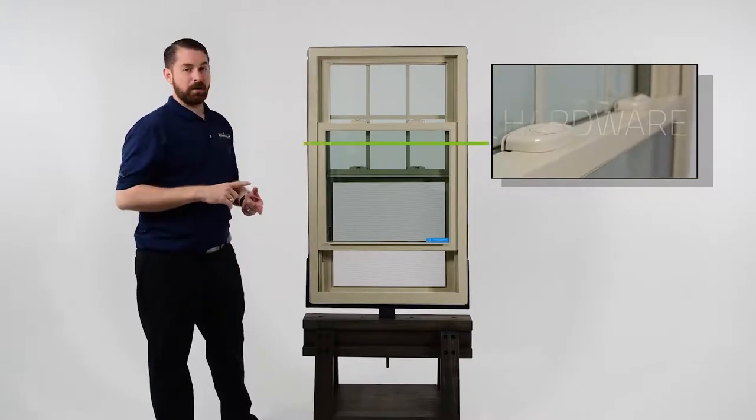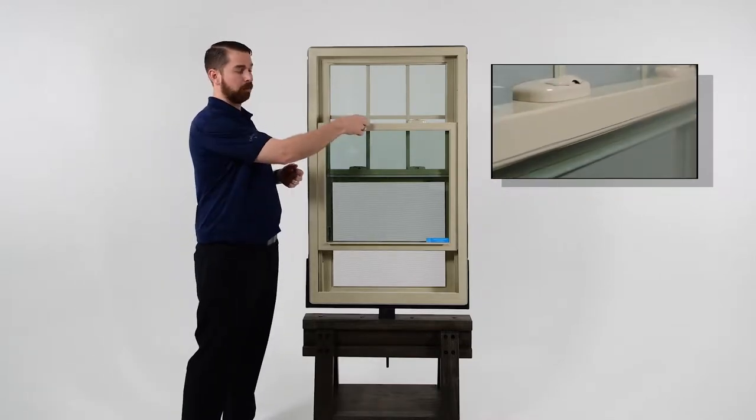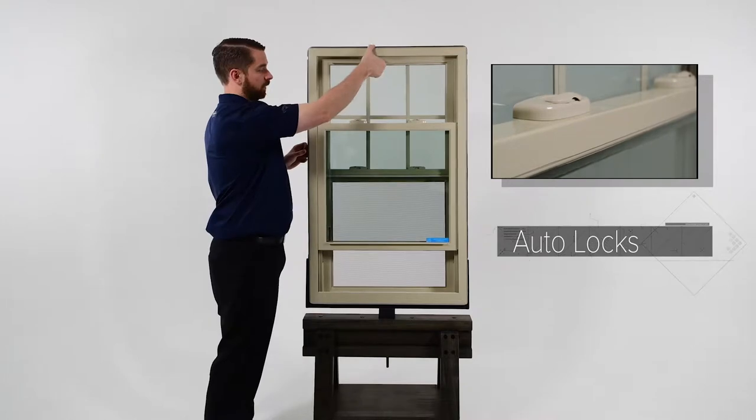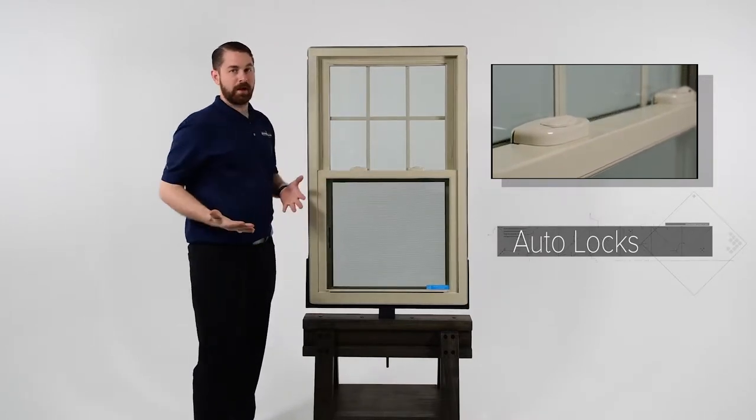Next we'll be talking about hardware. Just like the Tradition Single Hung, these have the auto lock. So when the window is unlocked, it's unlocked. When you shut the window, the window automatically locks.